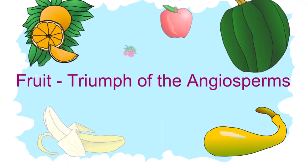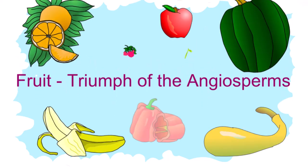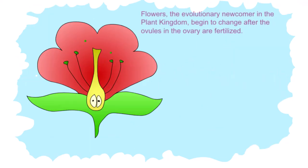Fruit: Triumph of the Angiosperms. Flowers, the evolutionary newcomer in the plant kingdom, begin to change after the ovules in the ovary are fertilized.